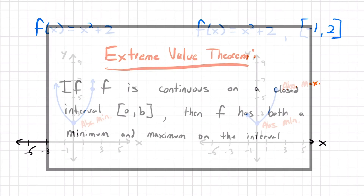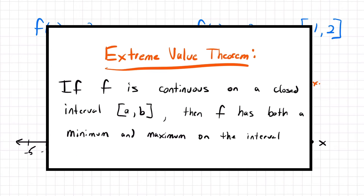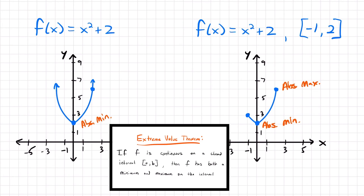That brings us to the Extreme Value Theorem. It says that if a function f is continuous on a closed interval from a to b — any two numbers — then that function has both a minimum and a maximum on the interval. We just saw this: x² + 2 did not have an absolute maximum until we closed it on the interval from negative 1 to 2.